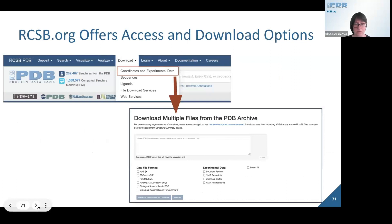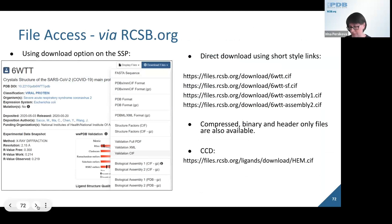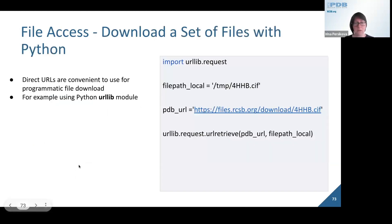RCSB.org provides a variety of data access and download options, including an option to download multiple files at a time. Individual files can be accessed through the download option at each structure summary page. We also provide direct short-style links for convenient download, as well as compressed binary and header-only files, and chemical component dictionary files. These direct URLs are convenient for programmatic file download, as shown using the urllib Python module, which will be described in more detail later in the course.